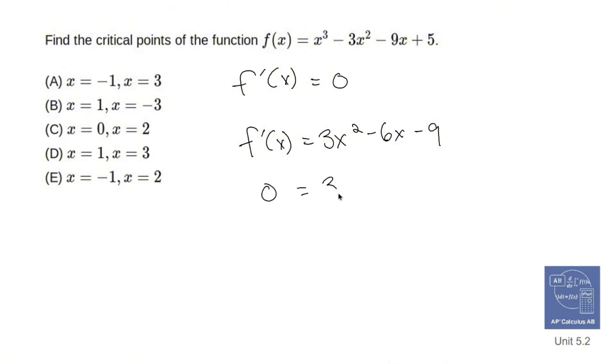Factor out a 3, you get x minus 2x, I'm sorry, x squared minus 2x minus 3. Factor that out and you get two numbers that add up to negative 2 and multiply out to negative 3, which are going to be x minus 3 times x plus 1.